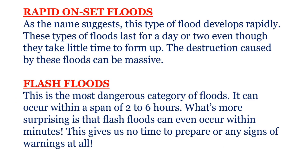Rapid onset floods — as the name suggests, this type of flood develops rapidly. These types of floods last for a day or two, even though they take a little time to form up. The destruction caused by these floods can be massive. Flash floods — this is the most dangerous category of floods. It can occur within a span of two to six hours, and what's more surprising is that flash floods can even occur within minutes. This gives us no time to prepare or any signs or warnings at all.